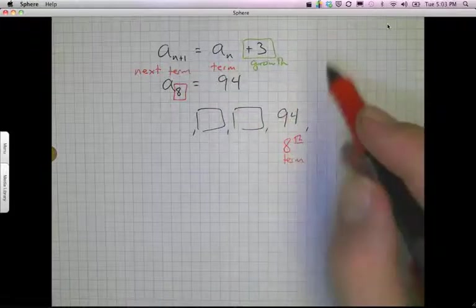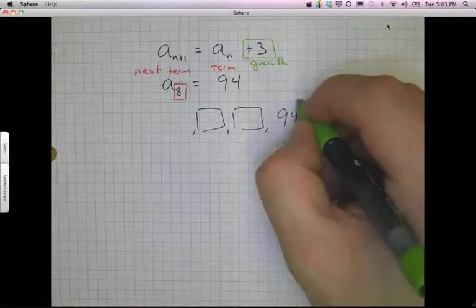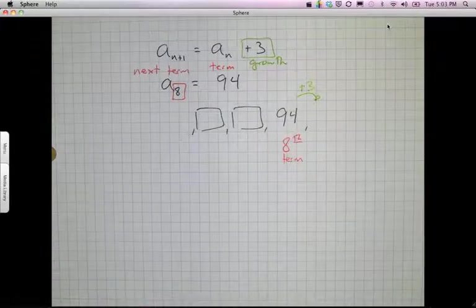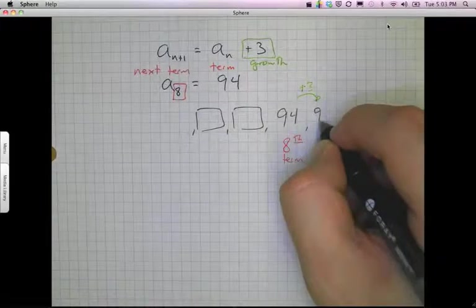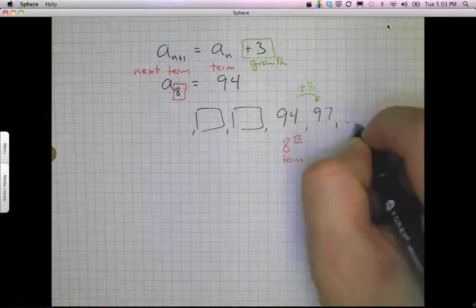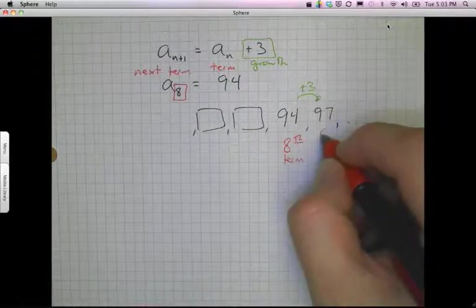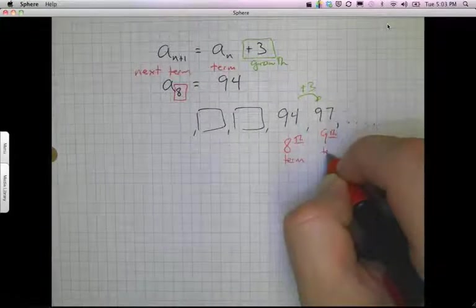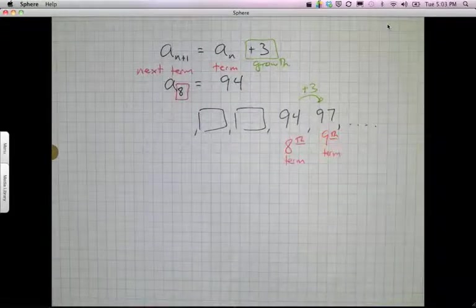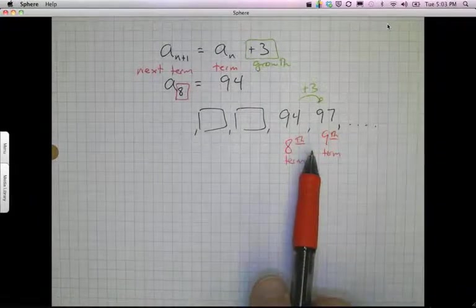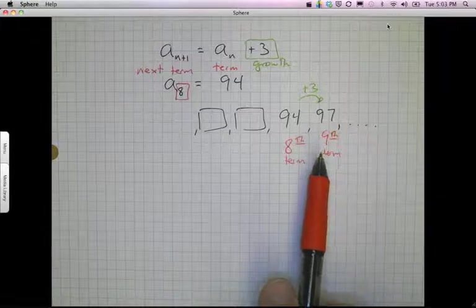So this next one, after I add 3 more, is going to give me the next term. So for this one, it's going to be 97. And so on and so forth. And I can keep using this to go on past the 9th term into whatever term I wanted. But that doesn't help me very much. Because these terms don't factor into the explicit formula at all. I don't use them at all in the explicit formula.